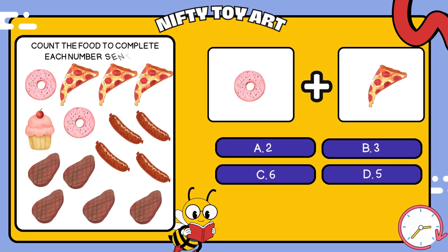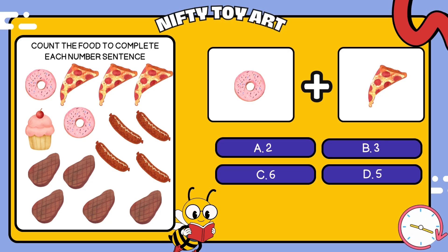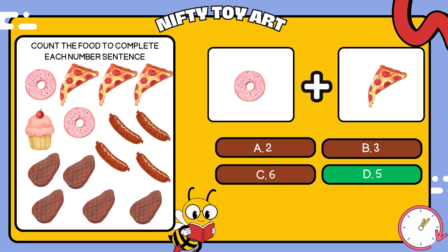We have donuts and pizzas. How many foods is that in total? That's right, five.